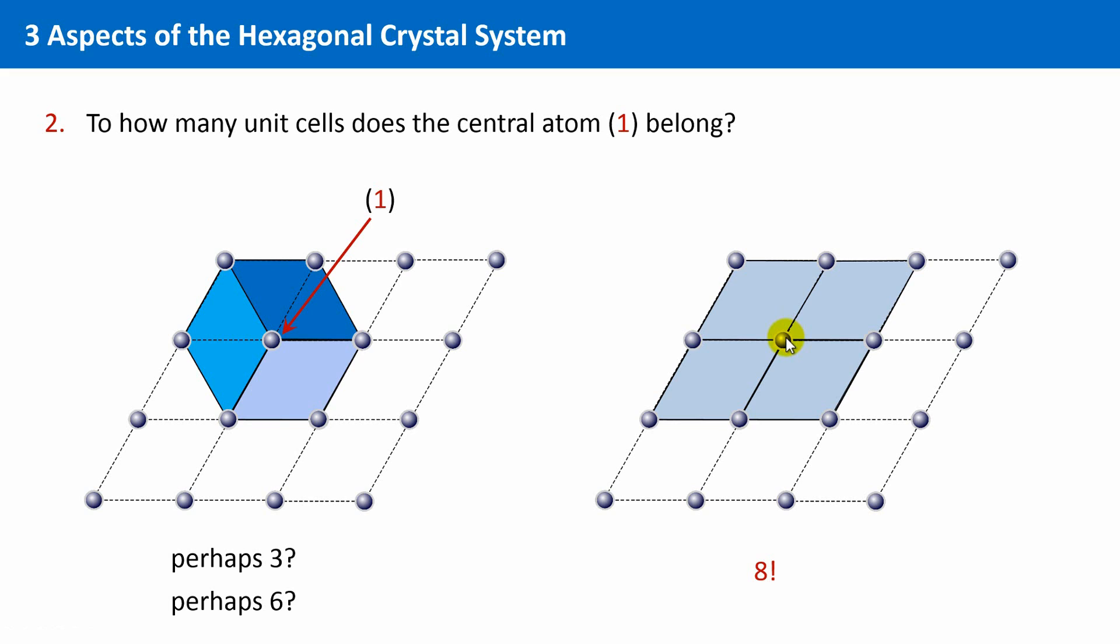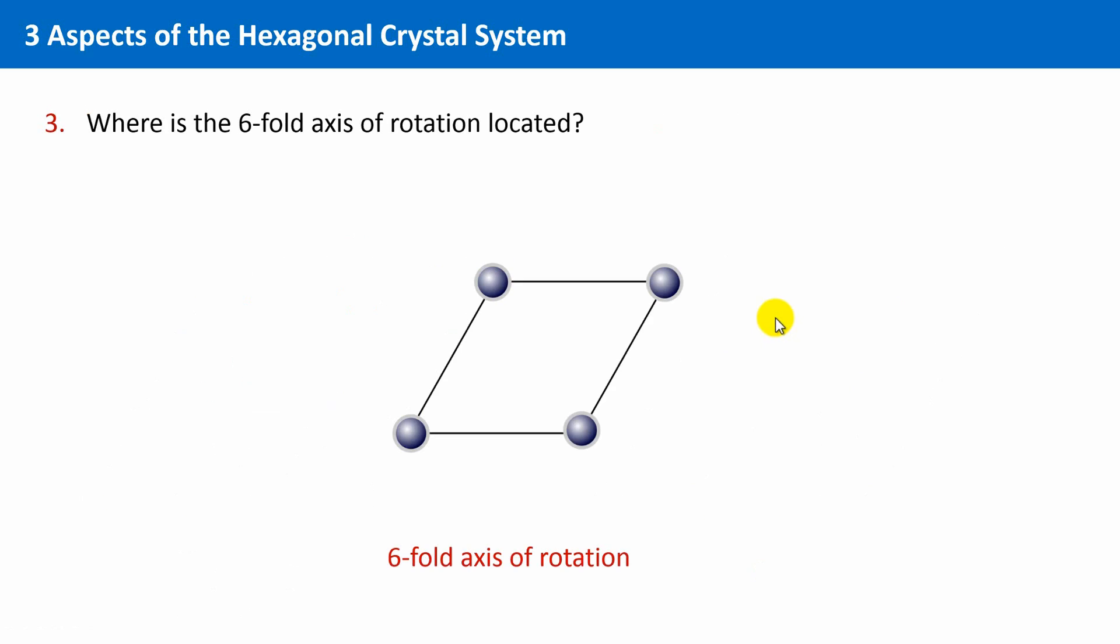If this was already clear to you, even better! The last question: the hexagonal crystal system is characterized by its six-fold rotational symmetry. And the question is, where is this corresponding axis of rotation located?